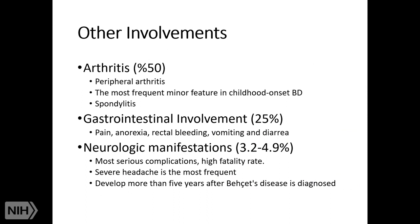Arthritis can be seen in 50 percent of patients. Gastrointestinal system involvement is around 25 percent; ulcers similar to oral and genital aphthous lesions can be seen throughout the GI tract, and patients typically complain of pain, anorexia, rectal bleeding, vomiting, and diarrhea. Neurological involvement is the least common of all clinical manifestations, but carries the most serious complications with a high fatality rate. Severe headache is the most frequent symptom, and neurological involvement typically develops more than five years after Behcet disease is diagnosed.